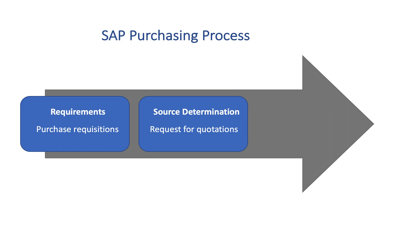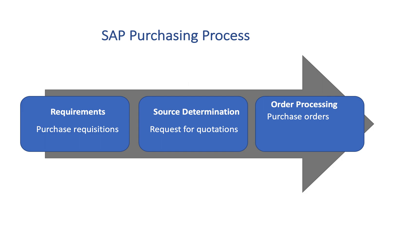Once the supplier is selected, the order processing step begins. For one-time orders, we create a purchase order. A purchase order is a formal request for goods or services from a supplier by a specific date for an agreed upon price. For longer-term agreements, we create contracts, which are agreements between a company and a supplier for material at an agreed upon price for the entire term of the contract.